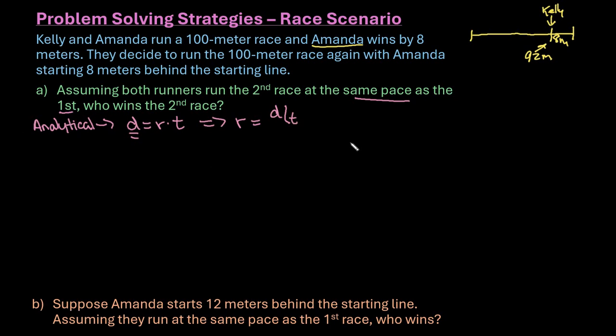Let's establish a rate for the two runners to start with. We know Amanda was the winner. Amanda ran the full 100 meters. Let's say it took 20 seconds for her to cross the finish line. So 100 divided by 20 tells me that she's running at a rate of 5 meters per second.